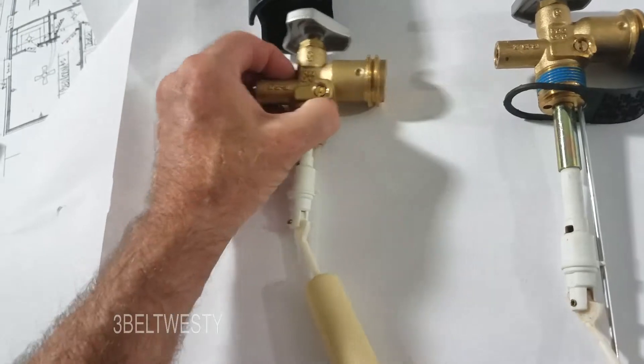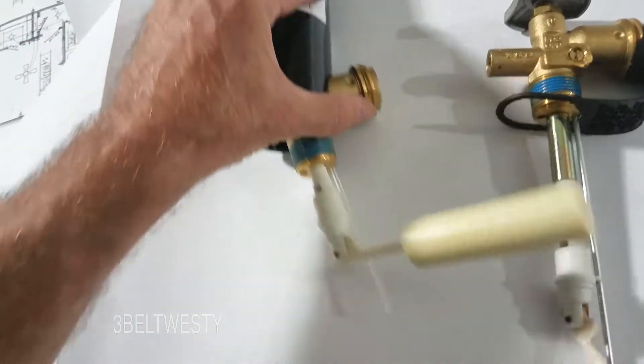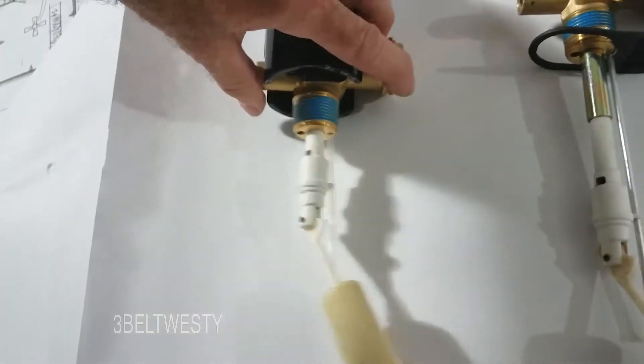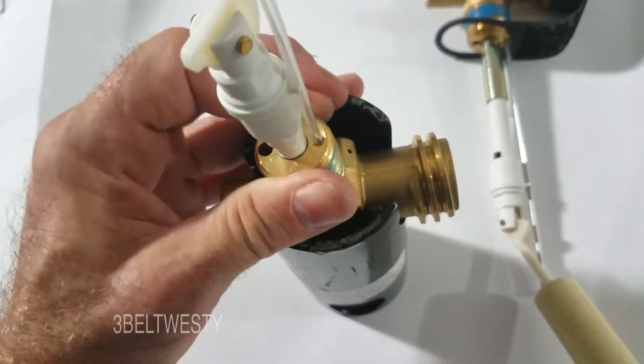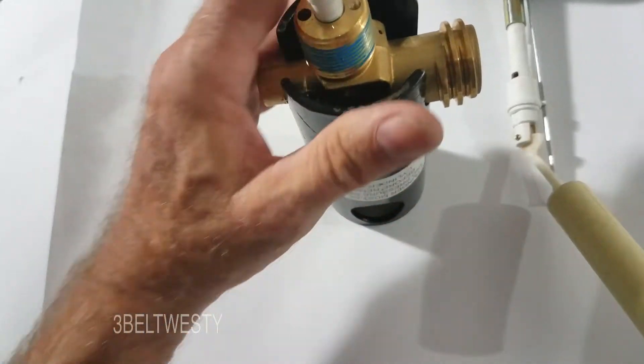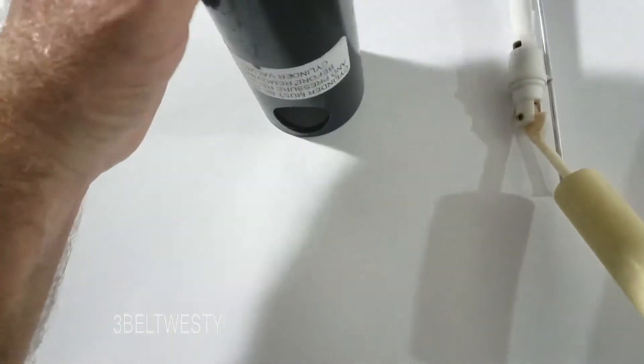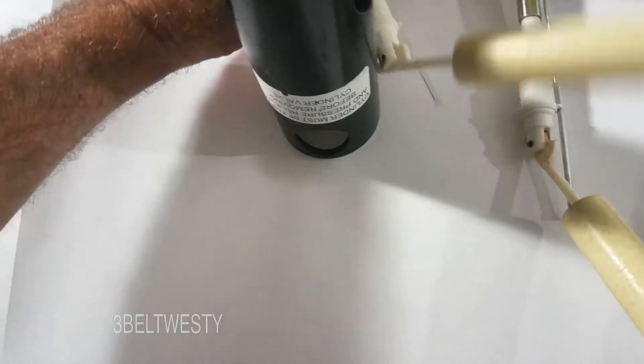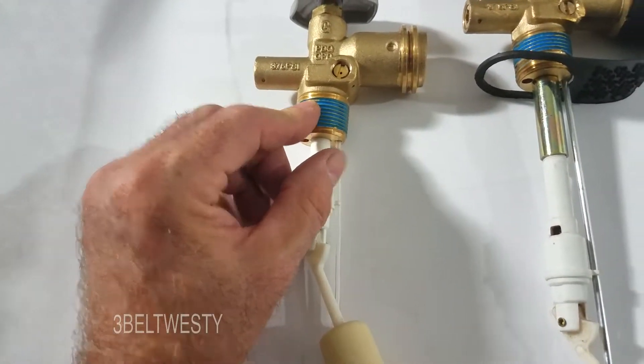Undo it, then you put a big cheater bar in there to take that off. And that's the thread sealant.